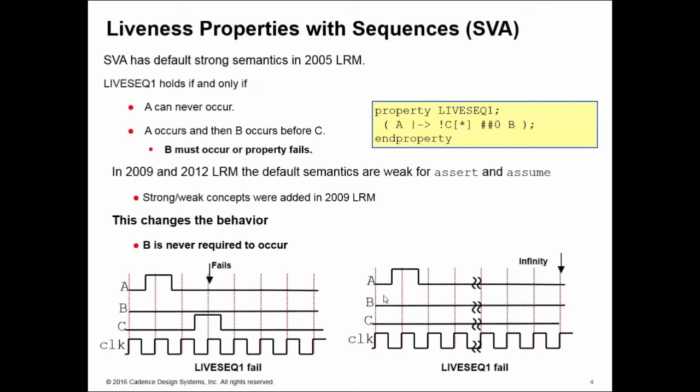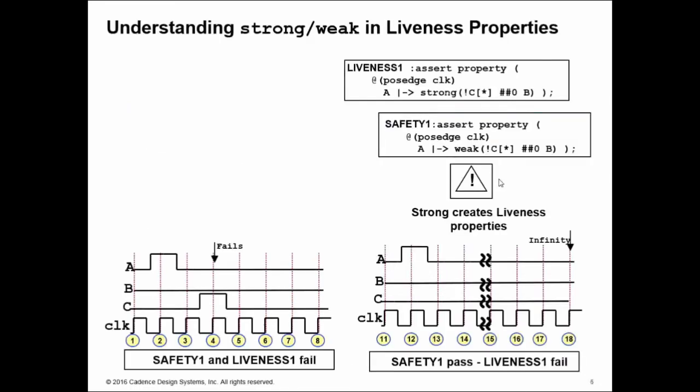Whether this second case, whether you observe this case or not, this live seek one fail depends upon whether the evaluation of your property is either strong or weak. I.e., are you using the 2005 LRM or are you using the 2009 or 2012 LRM, which is to say the least is not very helpful.